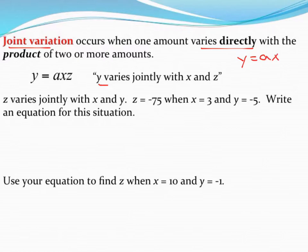So in this case, we have y varying jointly with x and z, which just means y equals a times x times z, and you can keep going for as many variables as you want. Jointly just means each one's being multiplied.